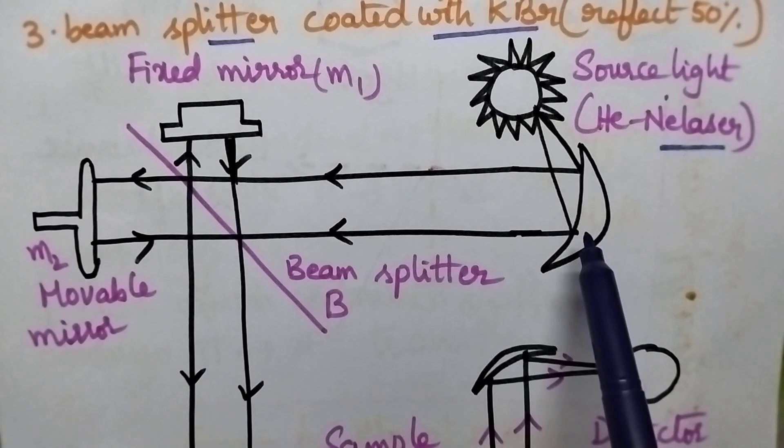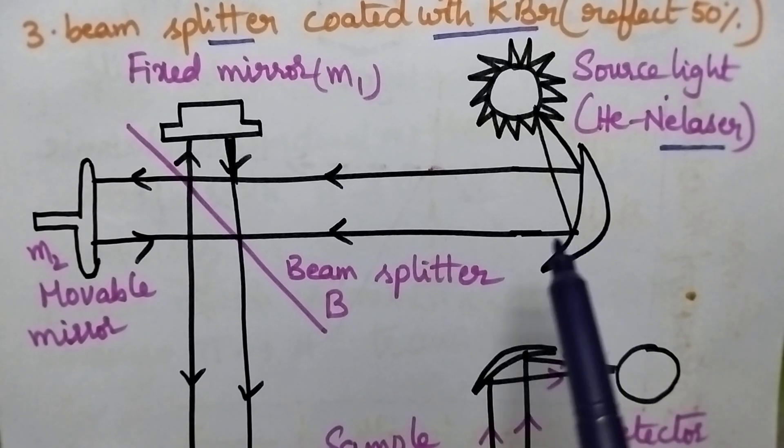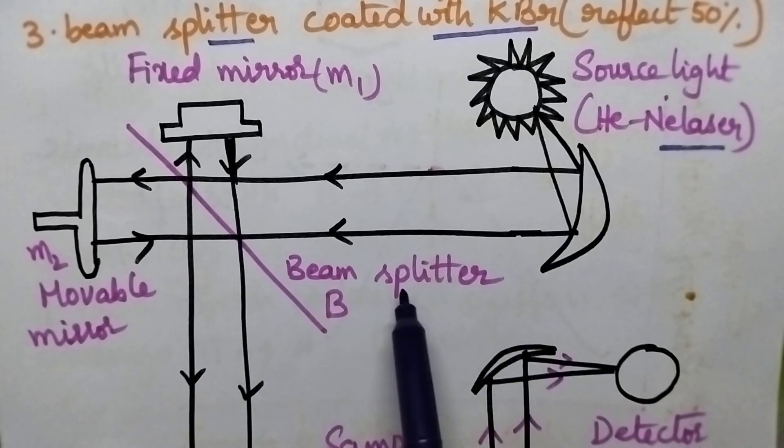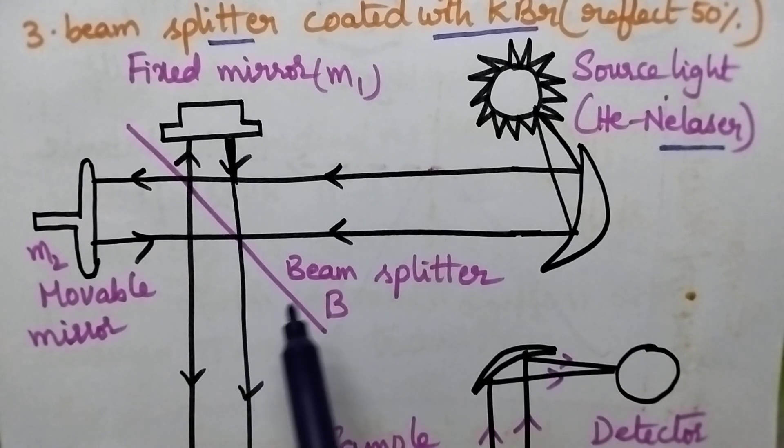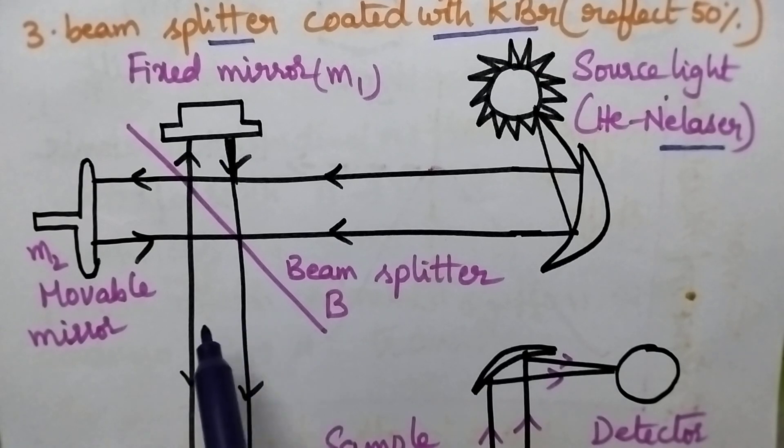Initially, whenever the light source falls on the beam splitter, it is capable of splitting the radiations into two identical halves having the same intensity.